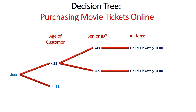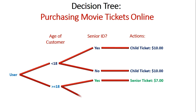When they are over 18, that's when the senior ID really factors in. If they do have a senior ID and they are over the age of 18, they can be charged a senior ticket for $7. And if they are over 18 but they do not have a senior ID, they're going to be charged a price of $18 as an adult ticket.